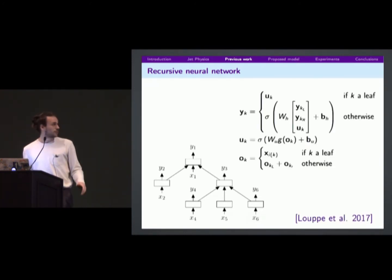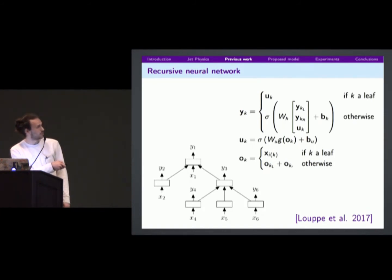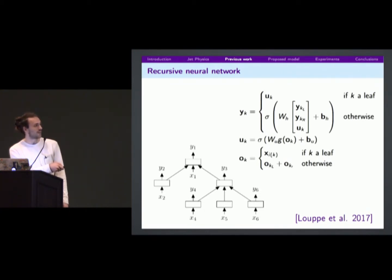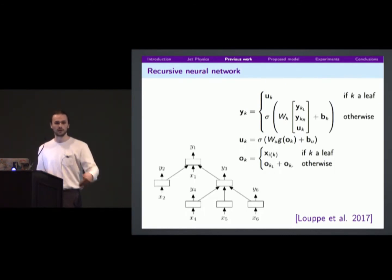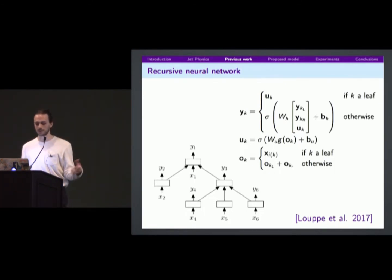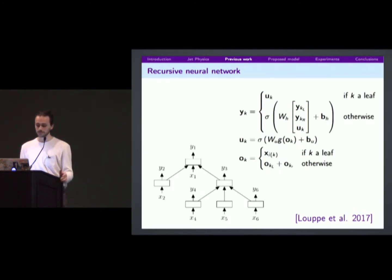The equations: to compute your new state Y, if it's a leaf, you have an embedding U of the leaf data. If it's not a leaf, you take the representation of the left child, the right child, and the node itself, and combine them into a new representation — applied the same way at every level. This induces self-similarity as an inductive bias. You compute representations from the bottom, propagate to the top node, and plug a classifier on top.